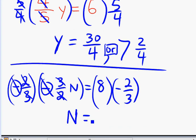We get just n equals 8 times negative 2, that's negative 16 over 3. And we can leave the answer as that. Hopefully, this will help.